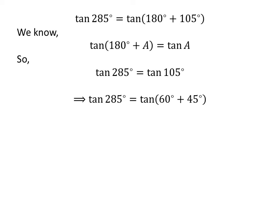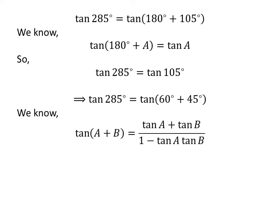105 degrees is equal to 60 degrees plus 45 degrees. So, tangent of 285 degrees is equal to tangent of 60 degrees plus 45 degrees. We know the trigonometry identity tangent of A plus B is equal to tangent of A plus tangent of B upon 1 minus tangent of A times tangent of B.